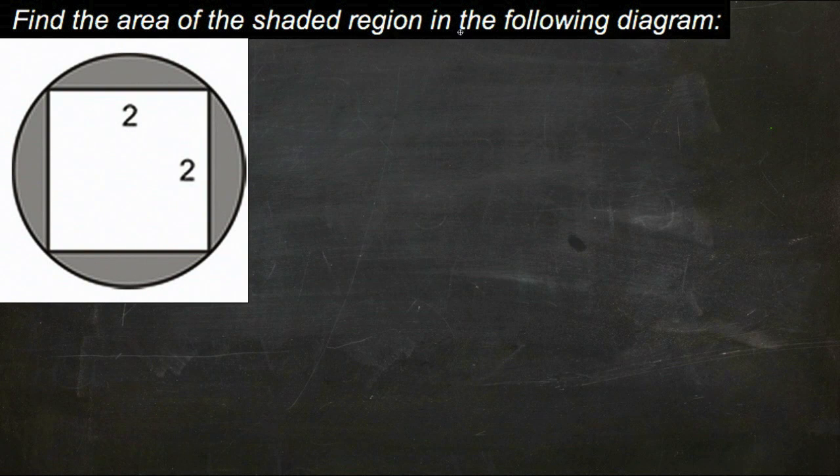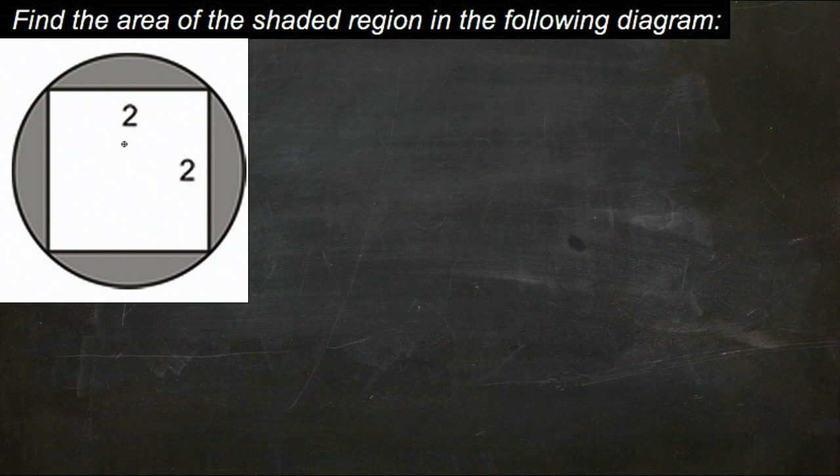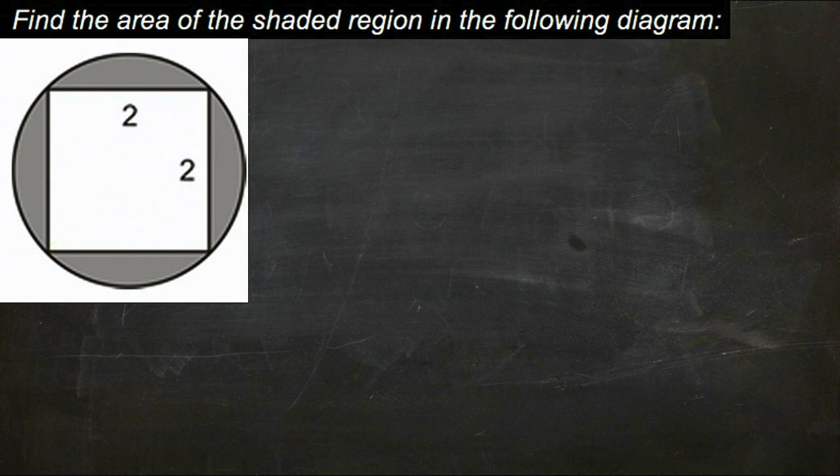Okay, we're going to find the area of the shaded region in the image we see here. The shaded region is the difference between the circle and the square. And if we take a look closely here, we can see that actually the diagonal of the square would be the same as the diameter of the circle.